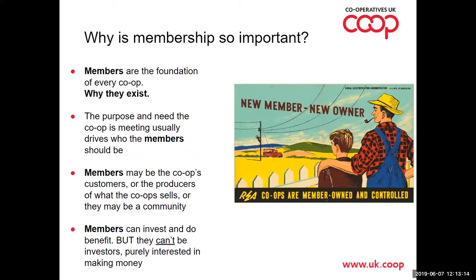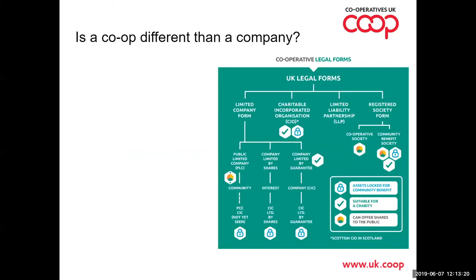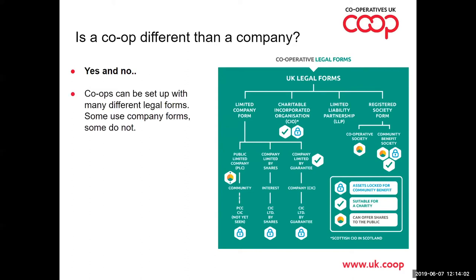A big question people often ask is: is a co-op different from a company? The answer is complicated. Cooperatives can essentially take any legal form at all. Yes, cooperatives can be companies — it's one form they can take — but not all cooperatives are companies. It changes over the years; back in the 70s most co-ops set up as companies, whereas now many use the society model because it's much easier to raise finance.